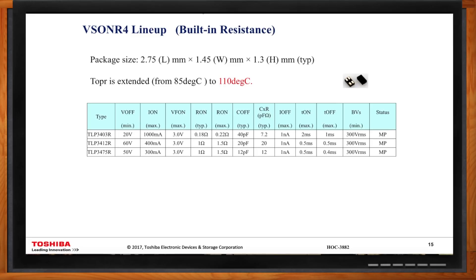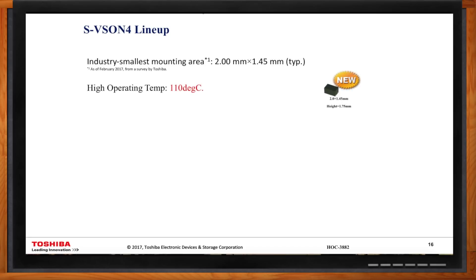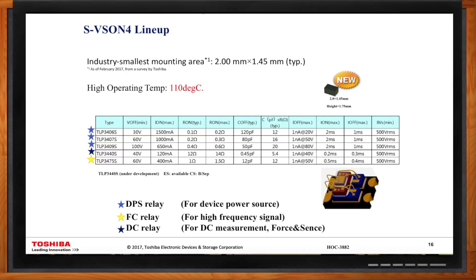Okay, so what is the smallest possible device if I'm really space constrained? Our smallest possible solution, and actually it's the industry's smallest photo relay available today, is called the SVSON4 lineup. It's 2.00 millimeter by 1.45 millimeters. Once again, a high operating temperature 110. As you can see here on this slide, we have five devices for you to choose from, and we're actually adding more and more.